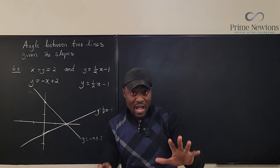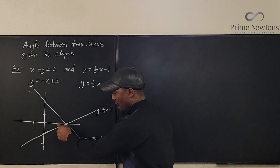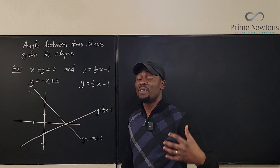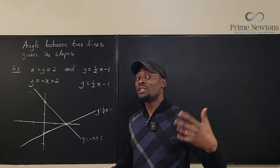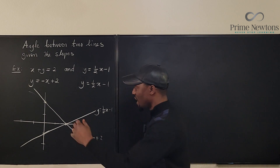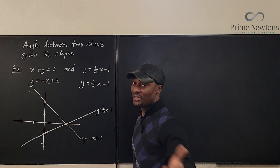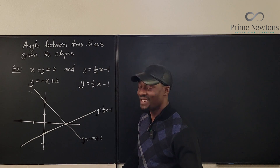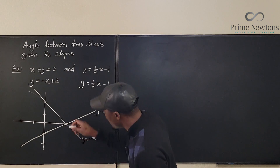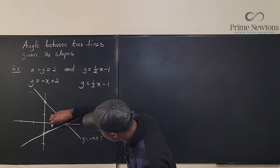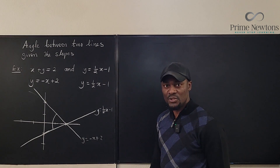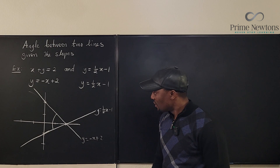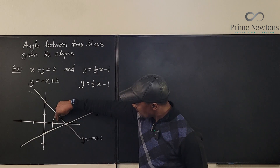As you can see, there are two angles we can talk about — we can talk about the smaller angle or the bigger angle. Every time you get a question like this, you're being asked to find the acute angle, the angle not greater than 90 degrees. So this is the angle we're looking for between these two graphs.